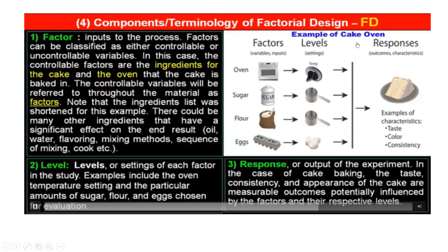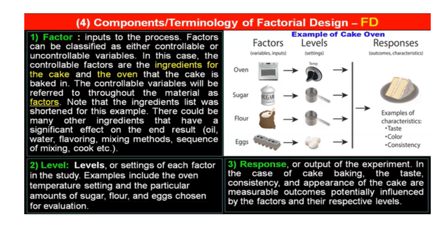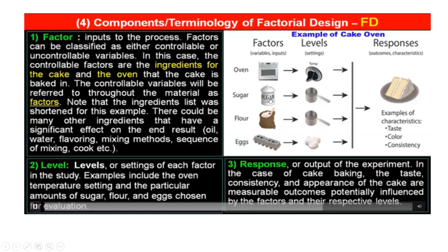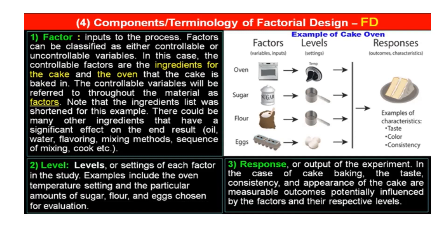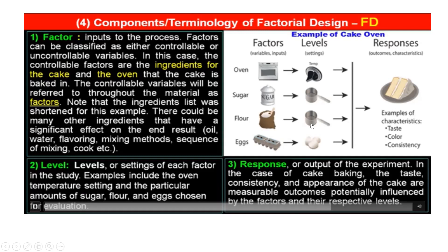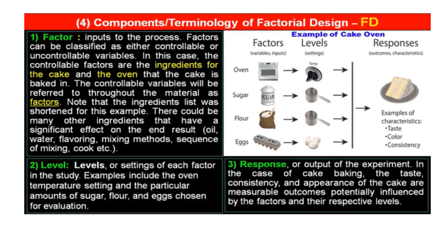Let us understand it with the help of an example. We are taking an example of baking a cake. Factors are all inputs or variables. The first factor is oven temperature — there are three levels. The second factor is the quantity of sugar, which you can measure with a cup. The third factor is flour level, again measured by a measuring cup. The fourth factor is how many eggs you are using.